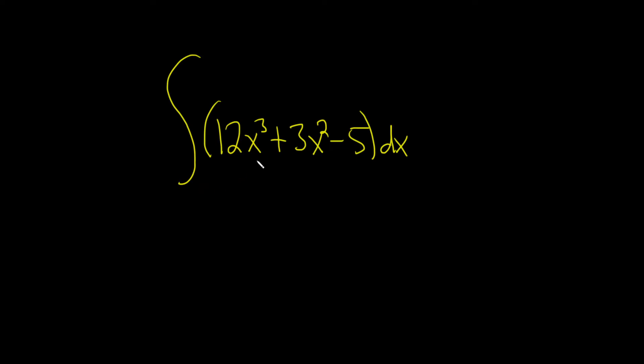Okay, so we have to integrate this. To do this, we'll just use the power rule, which basically says that when you have x to a power like this, as long as your exponent is not negative one, you just add and divide.